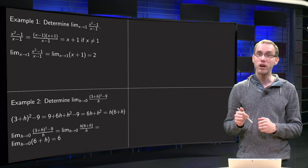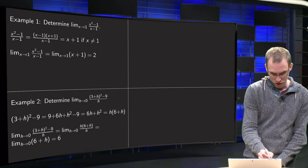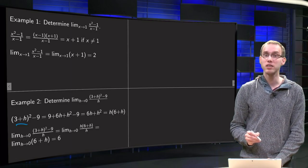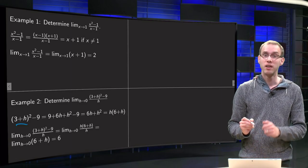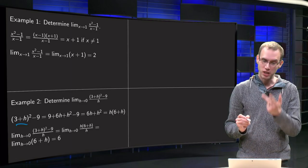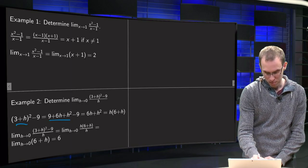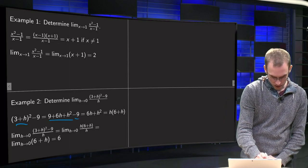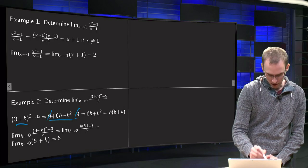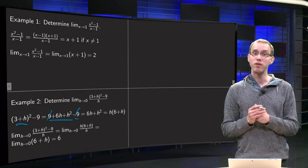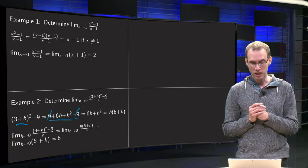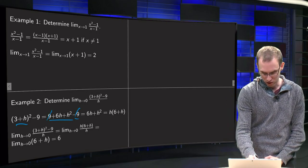What happens if we work out the numerator first? So, we have 3 plus h squared, work out the brackets, so we get 9 plus 6h plus h squared over here, minus 9 which we keep, and then the plus 9 and the minus 9 are canceling out, so we have 6h plus h squared, and we can take out the factor of h.